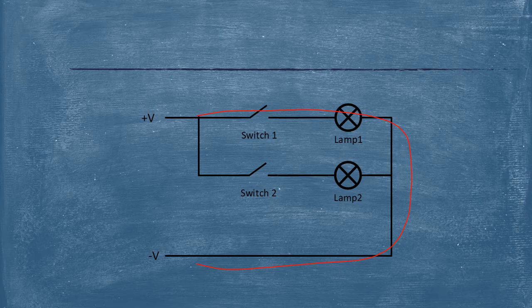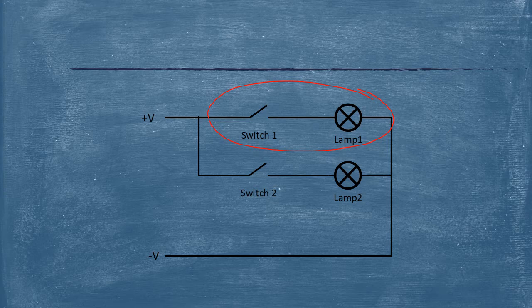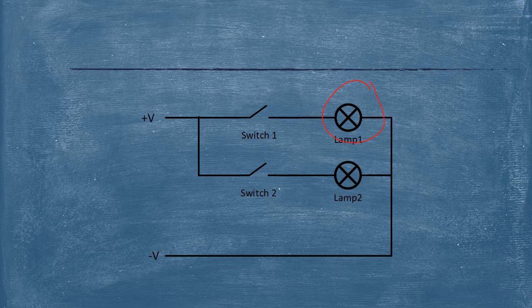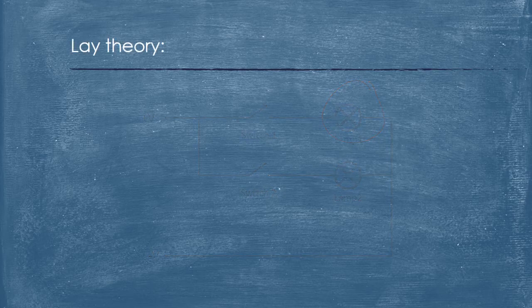then why does the electricity also flow through this light? Won't the electricity only go through the path of least resistance? Let's say this is the one that has a shorter run of wire, or maybe the lamp has a lower resistance. Wouldn't the electricity all go through there? So maybe our original lay theory is essentially incorrect.